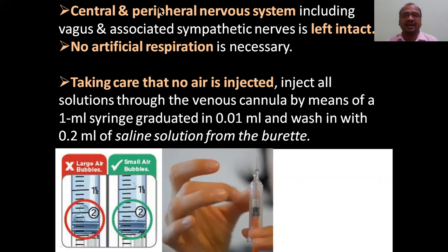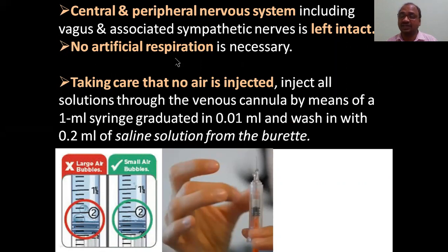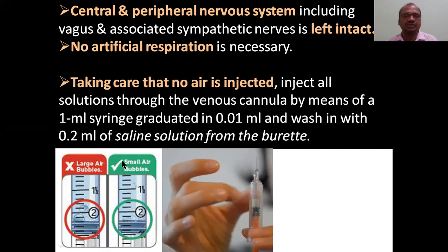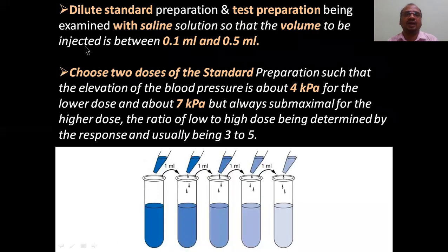Keep in mind: the central and peripheral nervous system must be left intact — don't touch them during surgery. No artificial respiration is required for the rat. Ensure no air is injected — tap the syringe to remove air bubbles before injection. Small air bubbles are okay, but large ones must be removed.